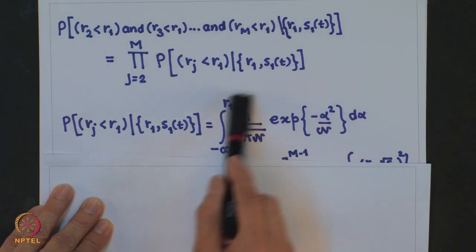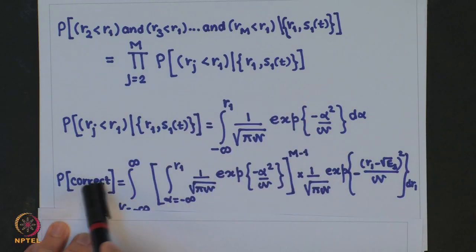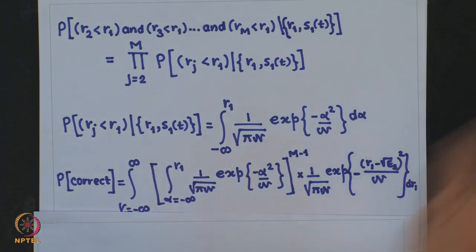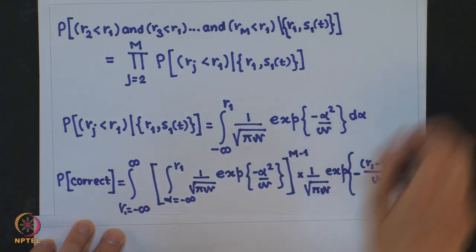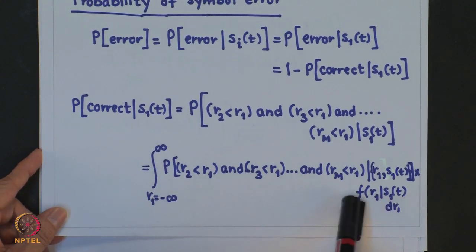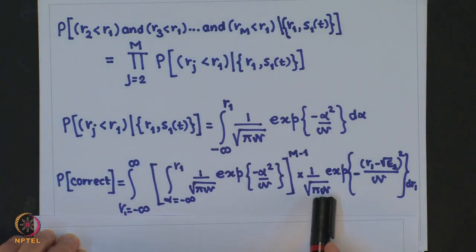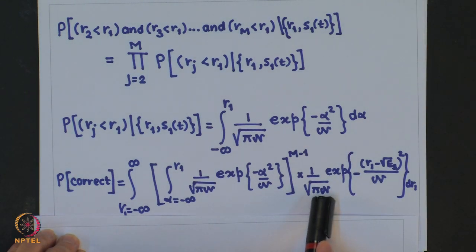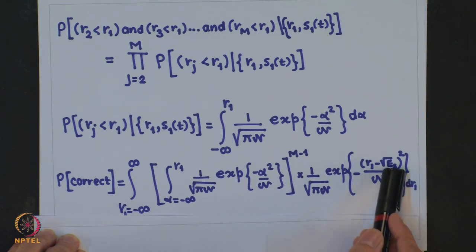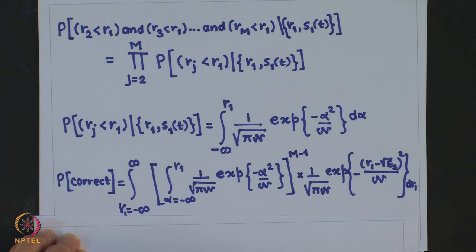This quantity raised to the power M−1 gives the joint probability condition. The probability of correct detection is then this quantity multiplied by the conditional pdf of R_1 given S_1(t), which is a Gaussian distribution with variance N₀/2 and mean √E_s.